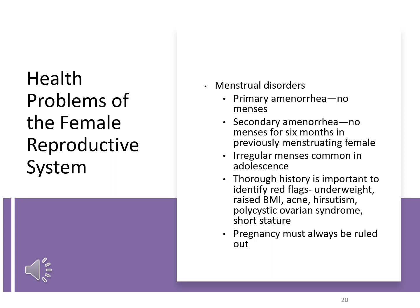If menstrual periods are completely absent, you want to first rule out pregnancy, then look at weight, BMI, acne, risk of PCOS, and short stature — all of which can be related to an endocrine problem. Always, always make sure that pregnancy is ruled out first for any complaint of lack of a menstrual cycle in a female.